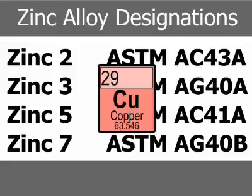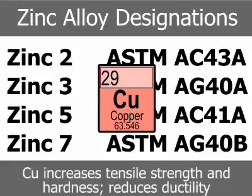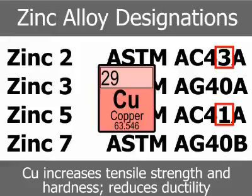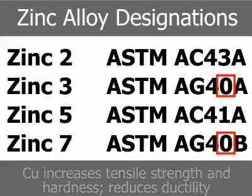Copper, in small amounts, increases tensile strength and hardness, but reduces ductility, particularly in the aged condition. Zinc 2 and 5 have nominal copper contents of 3% and 1% respectively. Copper is restricted to a maximum of 0.25% in Zinc 3 and 7.